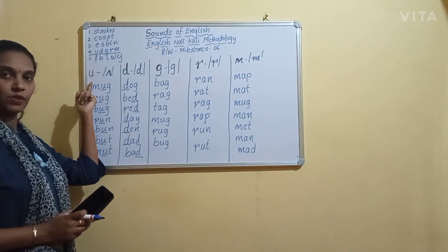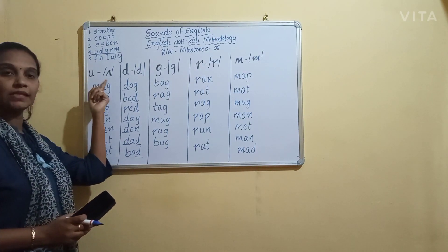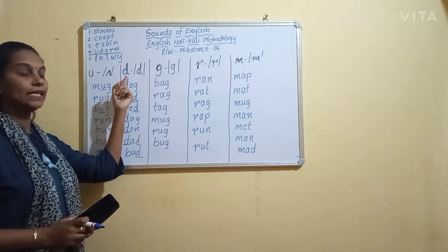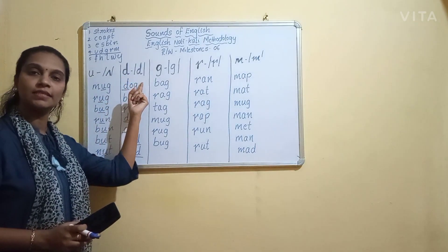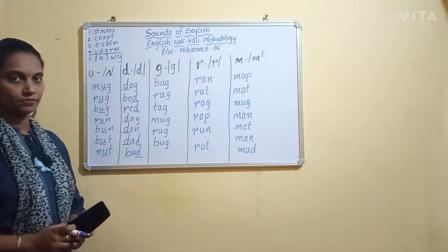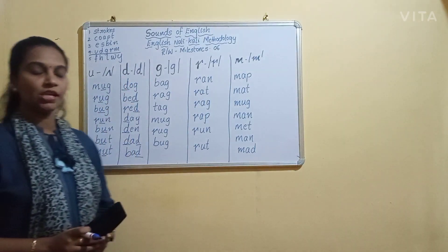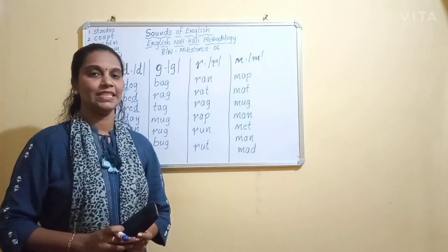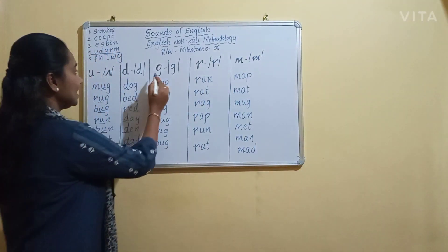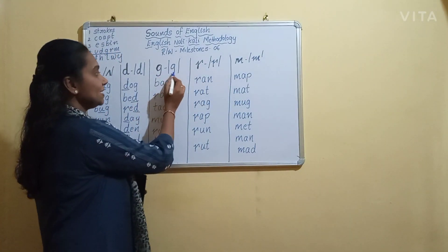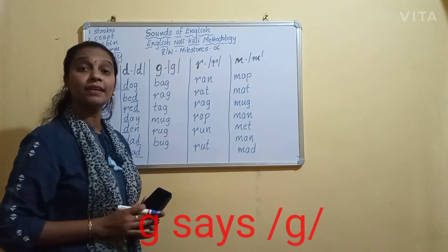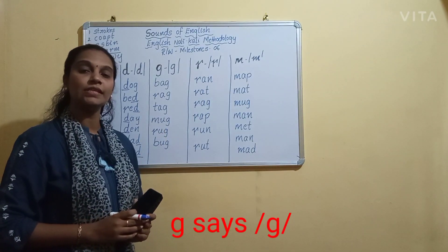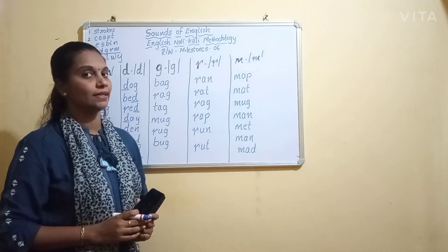We will revise once again. U says A. D says D. Shall we go to the next letter now? Letter G says G.